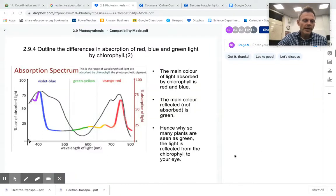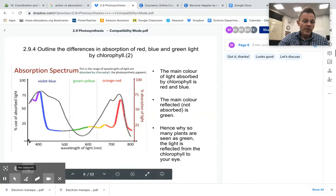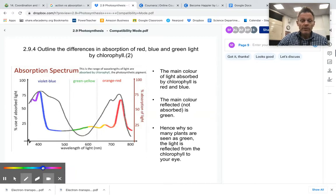Hey, y'all. So 2.94 wants us to outline the difference in the absorption of our different wavelengths of light, specifically red, green, and blue.